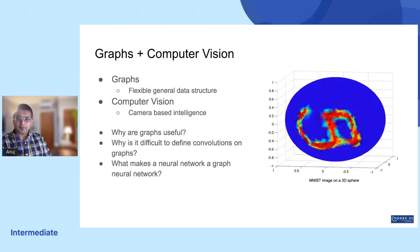So for this talk, I'm going to be focusing on graphs and try to explore these three questions: Why are graphs useful? Why is it difficult to define convolutions on graphs? And what makes a neural network a graph network? These three questions serve as a good framework to better understand this domain, as well as the common questions people have about this combination.